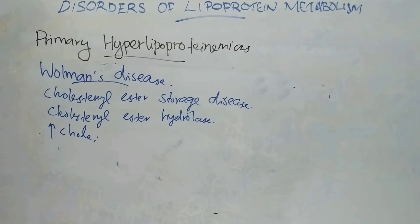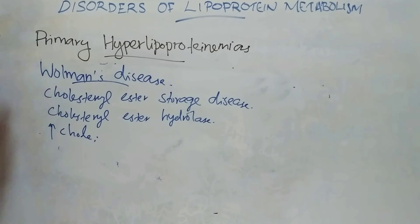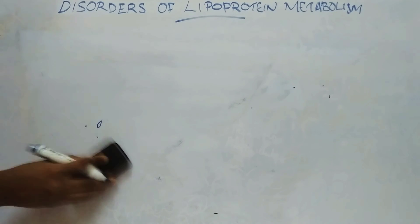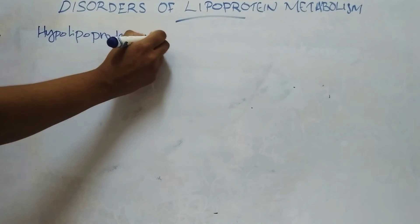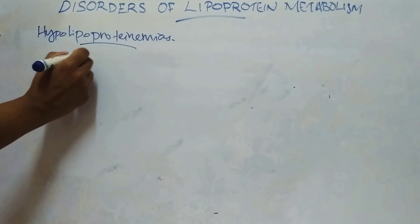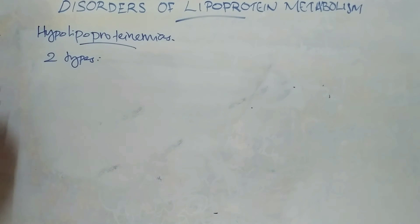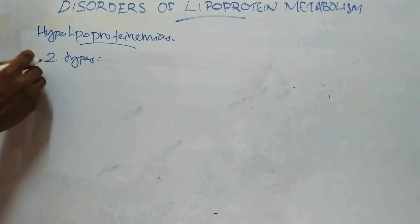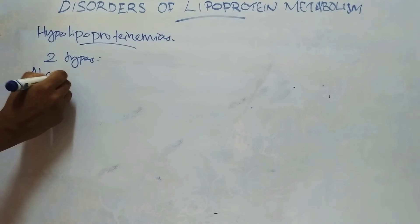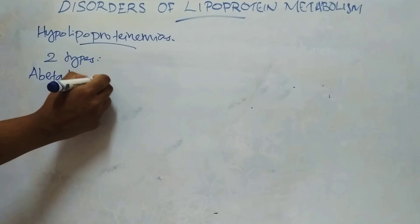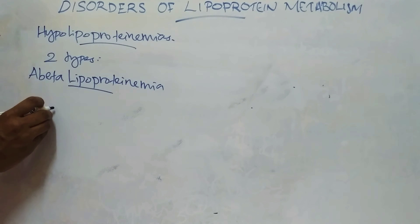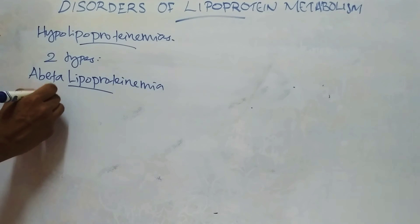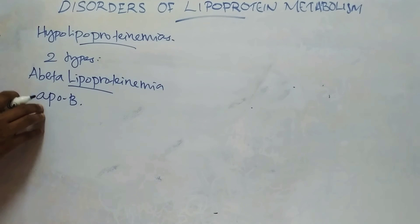Next is hypolipoproteinemias. Secondary hyperlipoproteinemias are due to underlying disease conditions, usually thyroid, liver, and adrenal diseases. Hypolipoproteinemias may be of two types: abetalipoproteinemia and Tangier's disease. In abetalipoproteinemia, the defect is in the synthesis of Apo-B.